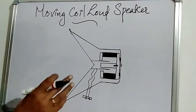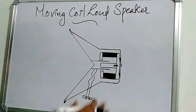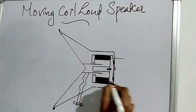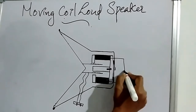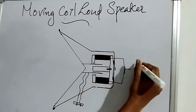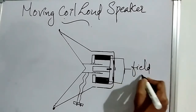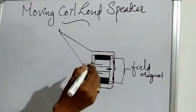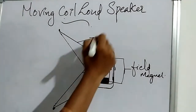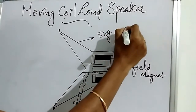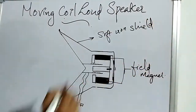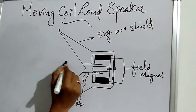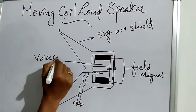Now, the main components of the moving coil loudspeaker are: the field magnet — there are two field magnets — and the soft iron shield. The next component is the voice coil; these two coils are called the voice coil.